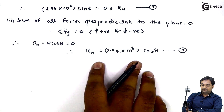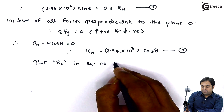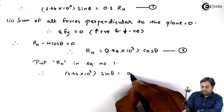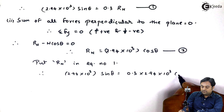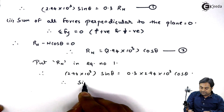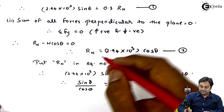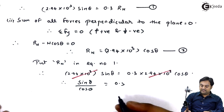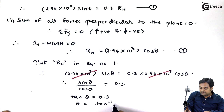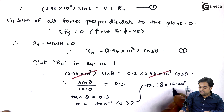Next I will put Rn from equation 2 into equation number 1. Hence 2.94 into 10 raised to 3 sin theta equals 0.3 into 2.94 into 10 raised to 3 cos theta. Keeping sin theta and cos theta, I shift all numbers to one side. The factor 2.94 into 10 raised to 3 cancels out, giving tan theta equals 0.3. In other words theta equals tan inverse of 0.3, therefore theta equals 16.70 degrees. That's the answer.